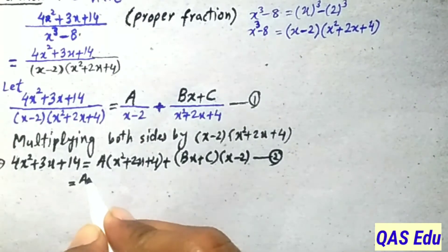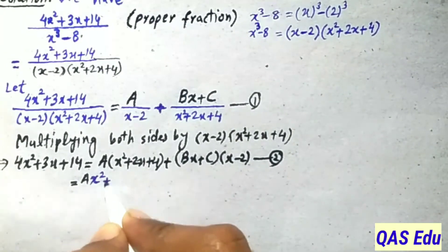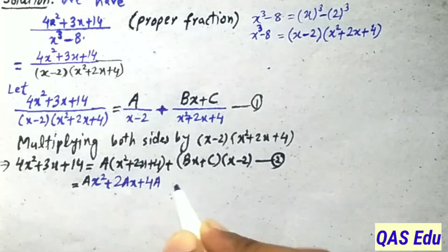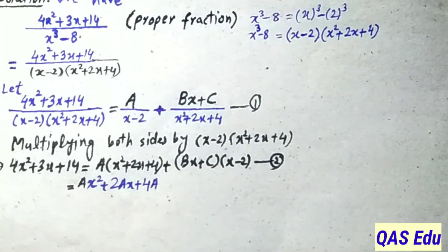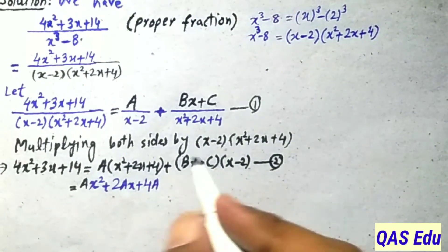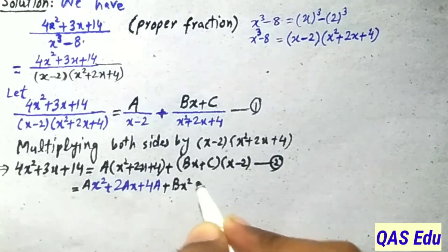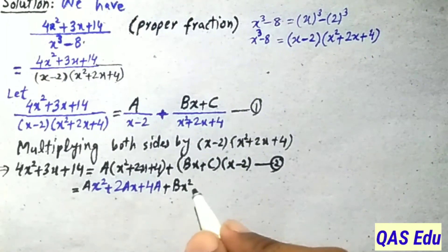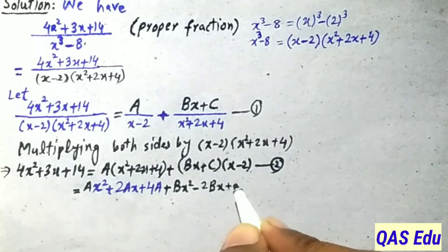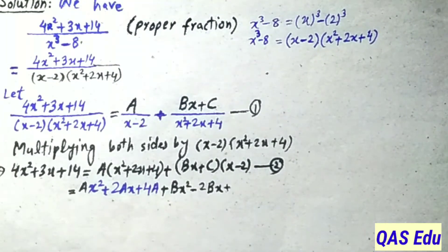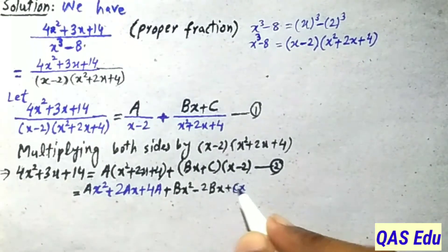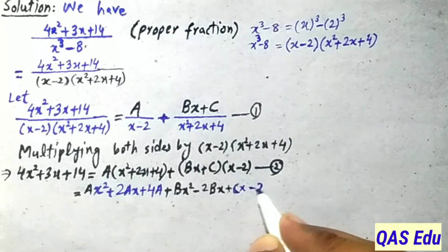Expanding A times (x² + 2x + 4): Ax² + 2Ax + 4A. Then expanding (Bx + C)(x - 2): Bx times x gives Bx², Bx times (-2) gives -2Bx, C times x gives Cx, and C times (-2) gives -2C.